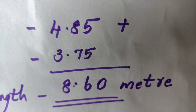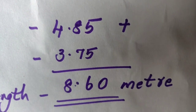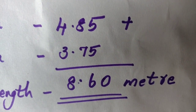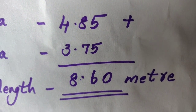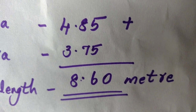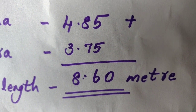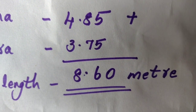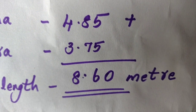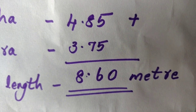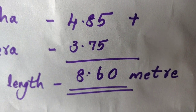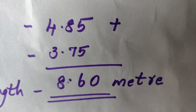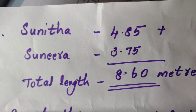Adding the two decimal numbers: 4.85 plus 3.75. Working through the columns: 5 plus 5 is 10, remaining 1; 8 plus 7 is 15, remaining 1; then 4 plus 3 plus 1 is 8. The total length of the original ribbon is 8.60 meters.